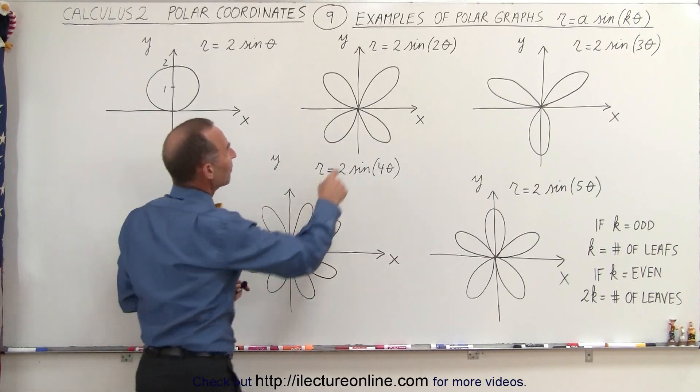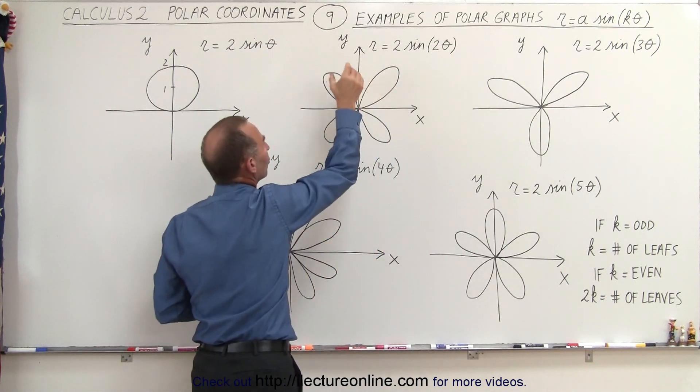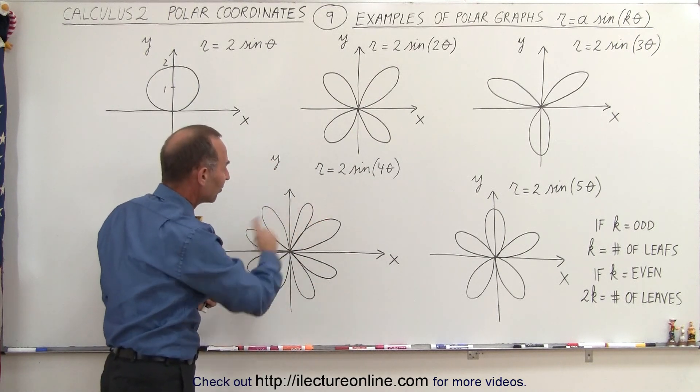Also notice that when we have an even number from the theta, none of the leaves is directly on top of any one of the axes. It's always skewed to one side or the other.